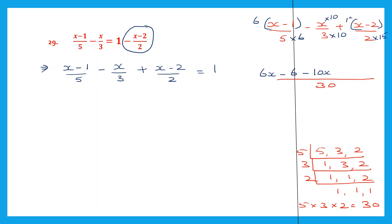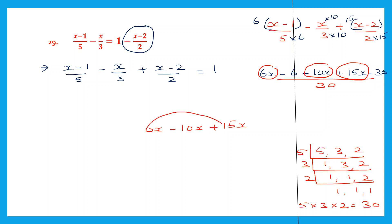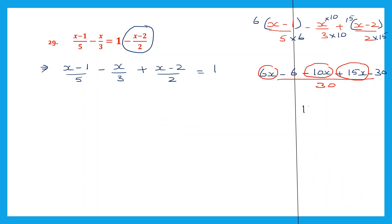So we multiply this by 15. 15 into x is 15x. So now let's work on the x. We have 6x minus 10x plus 15x. Add up the numbers with a plus sign: 6 plus 15 is 21. 21x minus 10x: 21 minus 10 is 11, so 11x. Now let's take the whole numbers. We have minus 6 and minus 30. Signs are the same, so put the same sign and add: 30 plus 6 is 36 by 30. So we have 11x minus 36 by 30 equals 1.